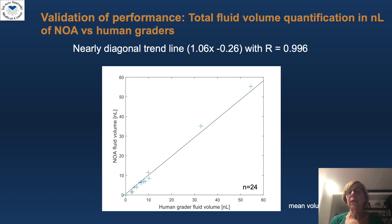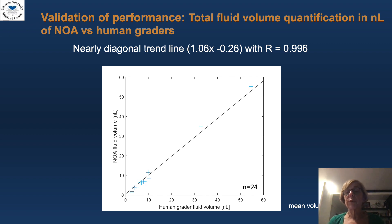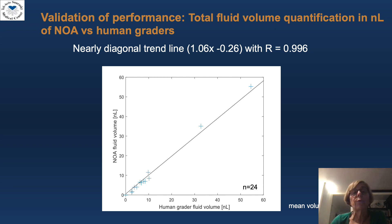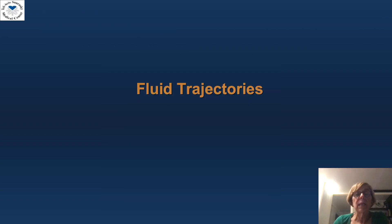The Pearson correlation of 24 volume scans from three time points of eight eyes, between fluid volume based on NOAA versus the mean volume calculated from manual delineation by two graders, was 0.996, with a close match to the 45-degree line.